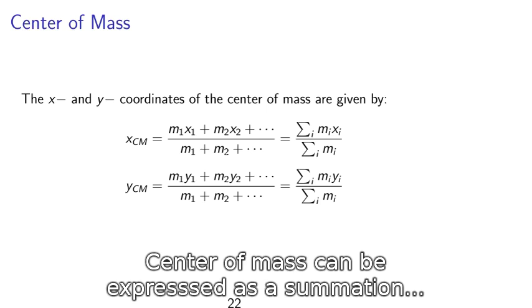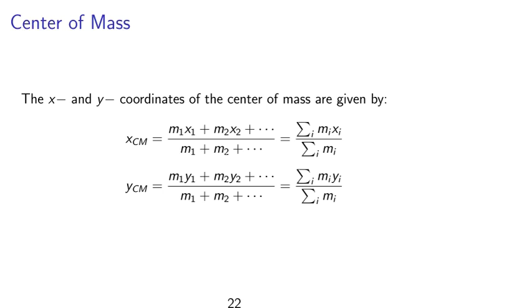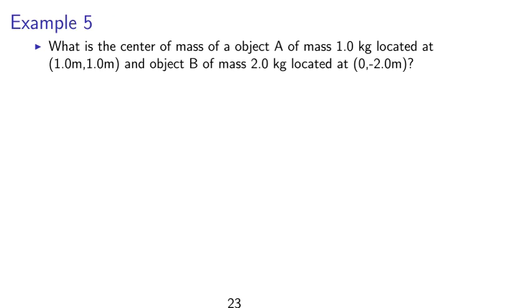The center of mass. X and y coordinates of the center of mass are given by xcm equals m1x1 plus m2x2 plus dot dot dot divided by m1 plus m2 plus dot dot dot. We write as a summation sigma i mi xi over sigma i mi, where i is summing over the particles or the objects in the system. Similarly for ycm.